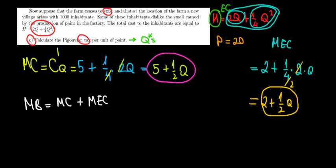We know the marginal cost from the previous video. The marginal benefit is the price at which we're selling the paint. So that would be 20 equals the marginal cost, which is 5 plus 1 over 2 times the quantity. And the marginal external cost would be equal to 2 plus 1 over 2 times the quantity.